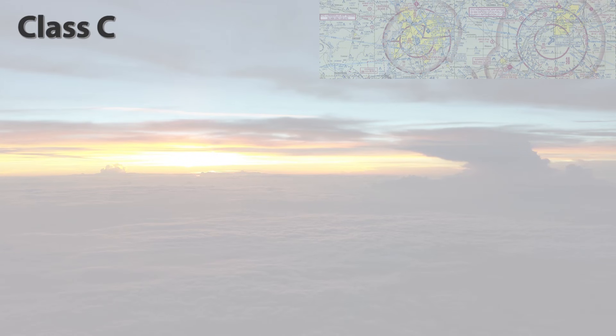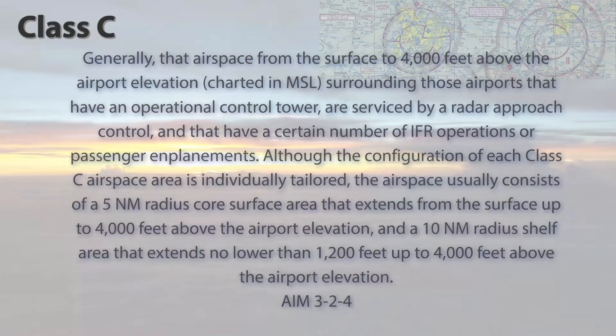Class Charlie Airspace. As defined in the AIM, Chapter 3-2-4, Class C airspace is generally that airspace from the surface up to 4,000 feet above the airport elevation, charted in MSL, surrounding those airports that have an operational control tower, are serviced by a radar approach control, and that have a certain number of IFR operations or passenger enplanements.